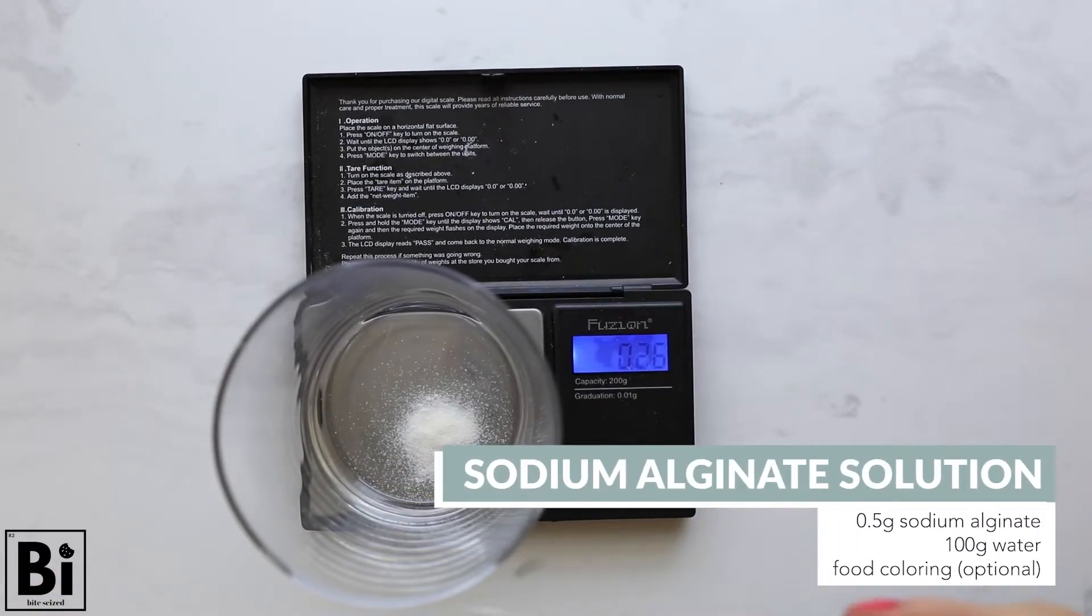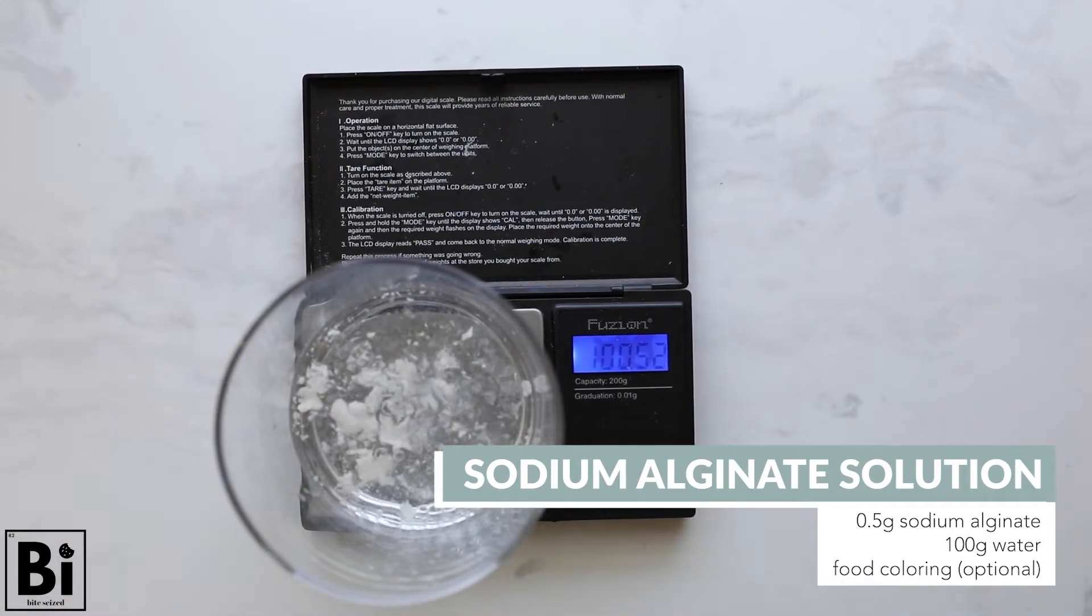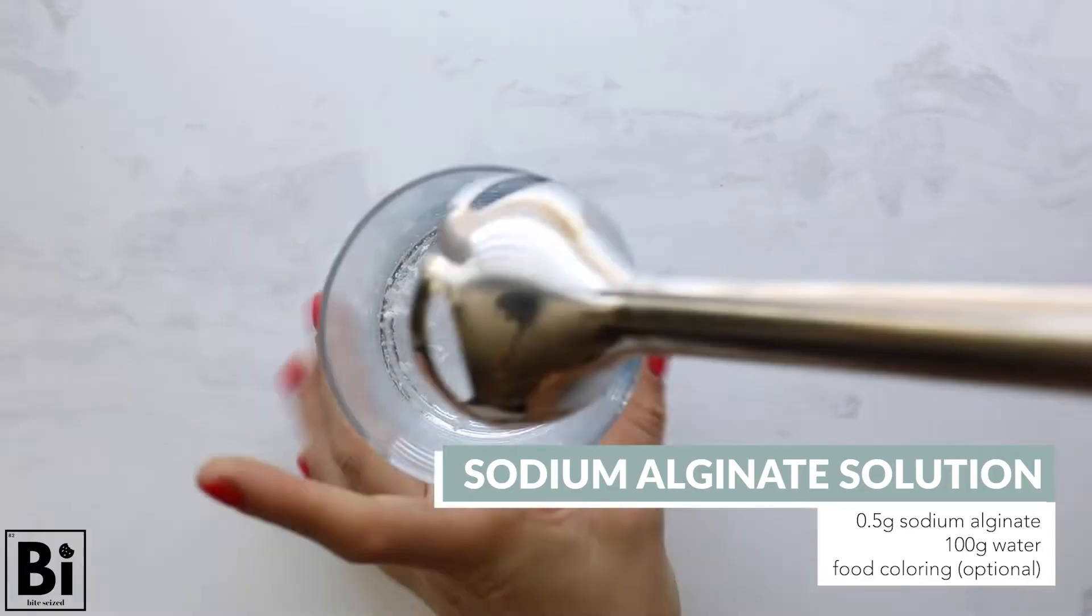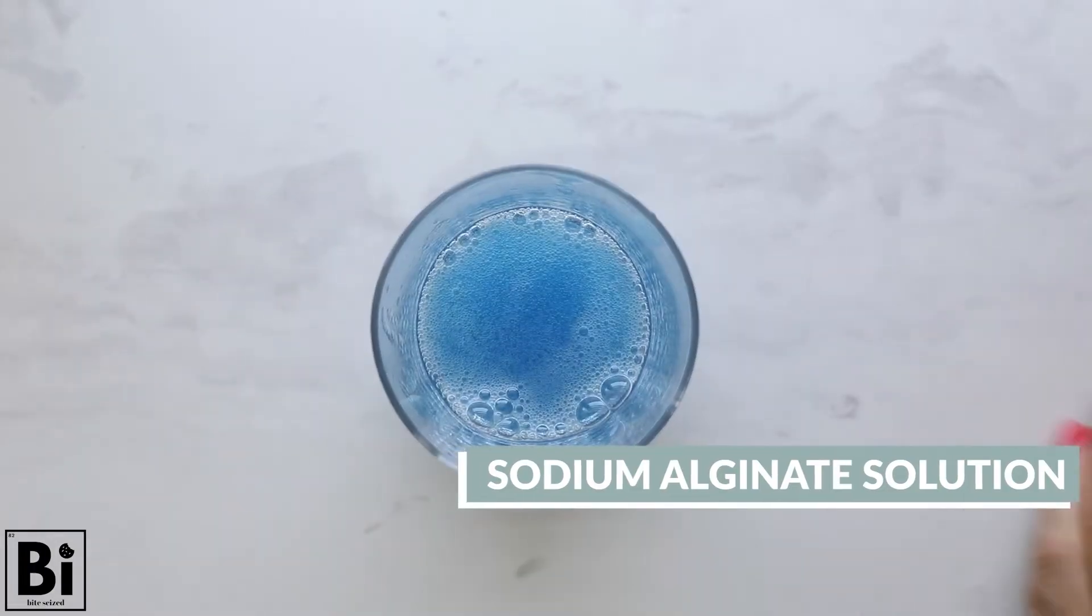First make a 0.5% sodium alginate solution in the cup by adding 0.5 grams of sodium alginate, 100 grams of water, and food coloring if you want. Then mix it with an immersion blender or a regular blender. If you do a regular blender, you'll probably need to double the amount to have enough.